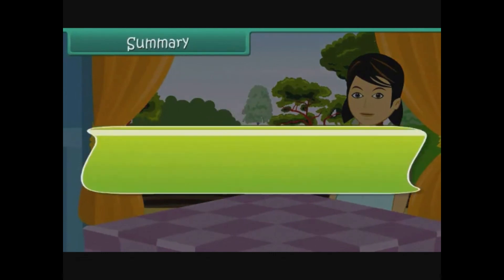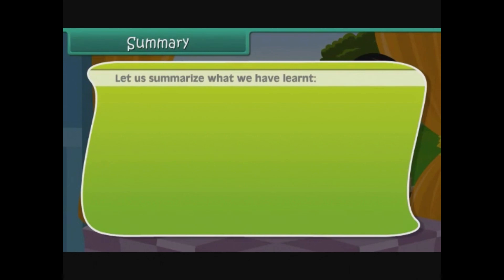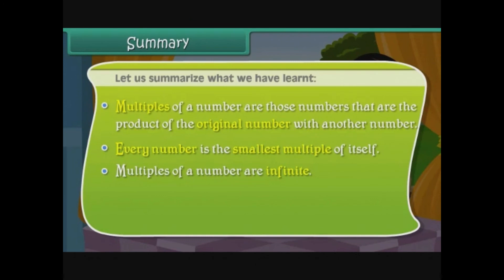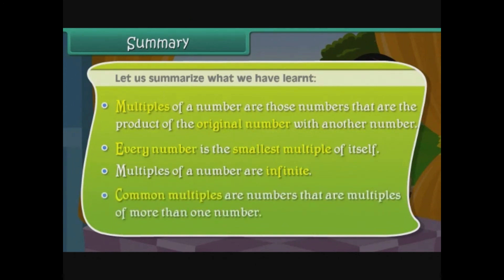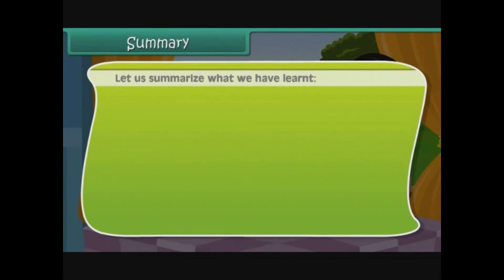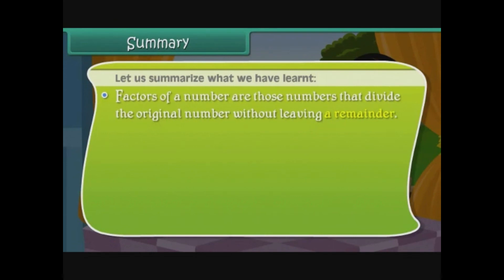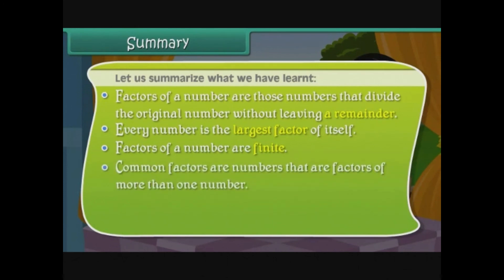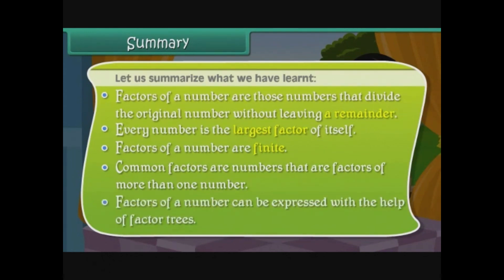Summary. Multiples of a number are those numbers that are the product of the original number with another number. Every number is the smallest multiple of itself. Multiples of a number are infinite. Common multiples are numbers that are multiples of more than one number. Factors of a number are those numbers that divide the original number without leaving a remainder. Every number is the largest factor of itself. Factors of a number are finite. Common factors are numbers that are factors of more than one number. Factors of a number can be expressed with the help of factor trees.